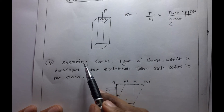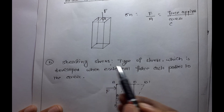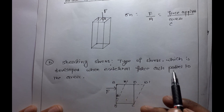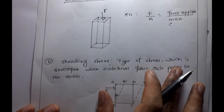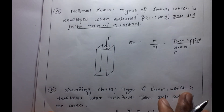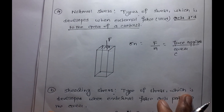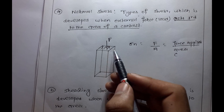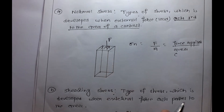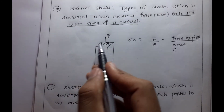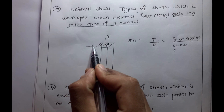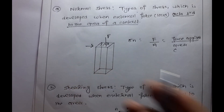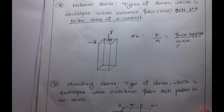The next type is shear stress, which is the type of stress developed when the external force acts parallel to the area of contact. Unlike normal stress where the force is perpendicular, shear stress is developed when the force is parallel to the area of contact.